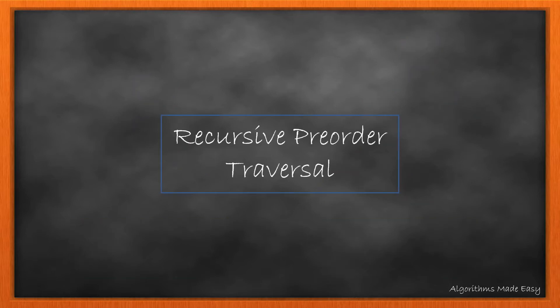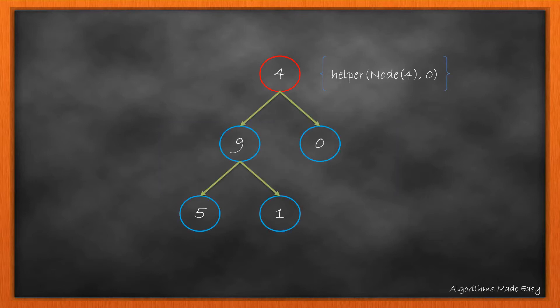The first approach that we are going to discuss is recursive preorder traversal. For this approach, we have a function which has two parameters: first a node, and second a temporary sum. We call the method on root node with temp sum as 0.